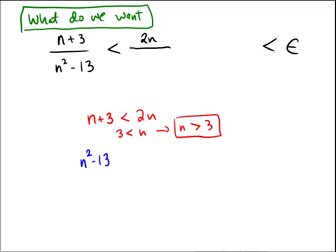So in other words, for 3, this is actually equal. For 2, we get 5 on the left and 4 on the right, so it's not even true for 2. But once we go to 4 and beyond, the integers from 4 and beyond, this inequality will be true for the numerator.